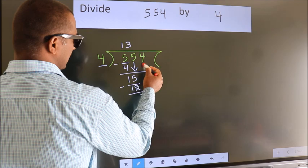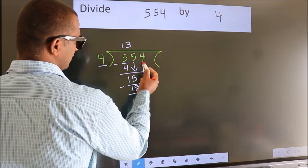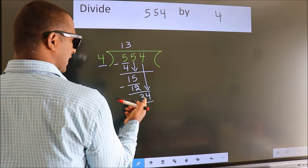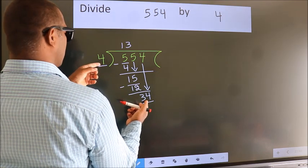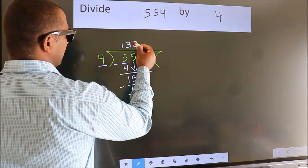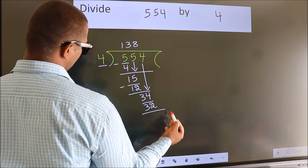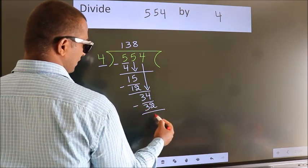After this, bring down the beside number. So 4 down. So 34. A number close to 34 in the 4 table is 4 eights, 32. Now we subtract. We get 2.